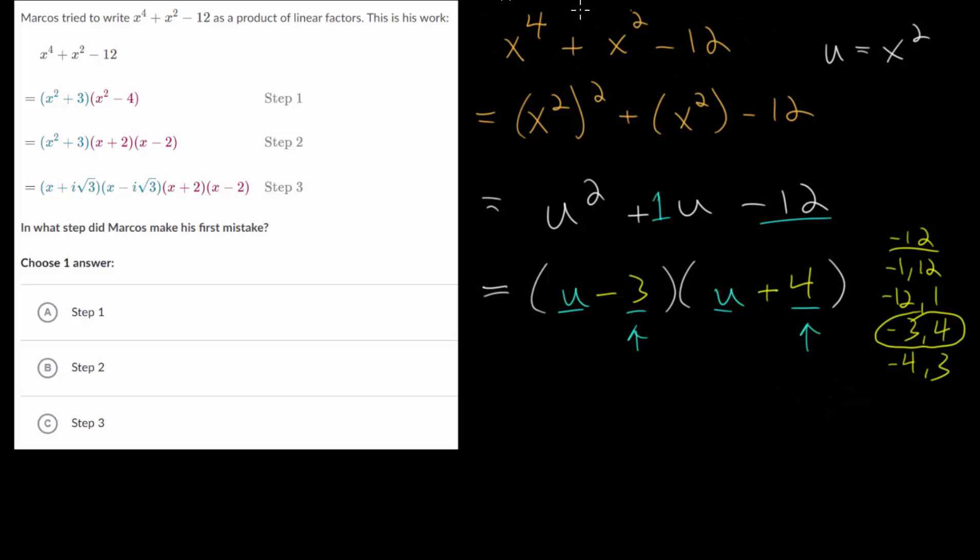But we originally started with the variable x, so let's plug x squared back in for u. By doing that, we would end up with x squared minus 3 multiplied by x squared plus 4. At this point, if we go back and compare our work to his work, we can see that through step 1, we ended up with different solutions. So there's already a mistake here.